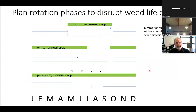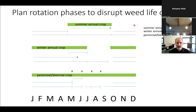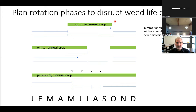One thing you can do when planning crop sequences within a rotation is how to disrupt life cycles with different types of crops. If you've got a dominant summer annual weed and you just keep growing a summer annual crop, you've created a perfect environment for that summer annual to grow and reproduce year after year. That's exactly what's happened in central Illinois, where corn-soybean rotations have narrowed the weed community to a perfectly adapted weed species.